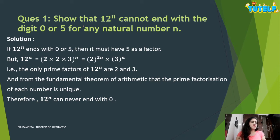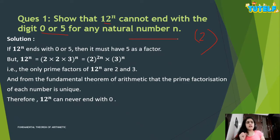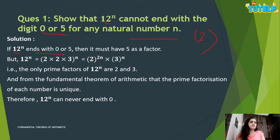This question usually comes for two marks in CBSE. It asks us to prove that 12 raised to power n cannot end with digit 0 or 5 for any natural number n. We know that if a number ends with 0 or 5, it must have 5 as a factor — that is, it must be divisible by 5. So if 12^n ends with 0 or 5, it must have 5 as a factor.